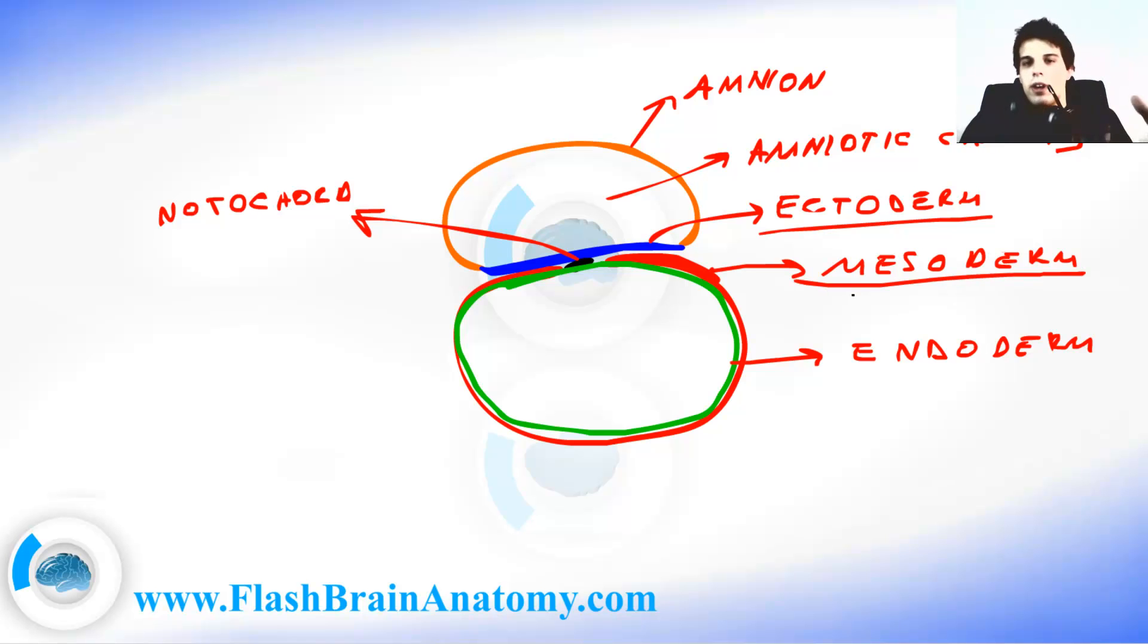Now the mesoderm layer is the middle layer between the ectoderm and endoderm. It is important for connective tissue development. Endoderm is the innermost layer. It forms the epithelial lining of multiple systems. But we are not actually interested in endoderm and mesoderm that much. We are interested in the ectoderm and notochord.